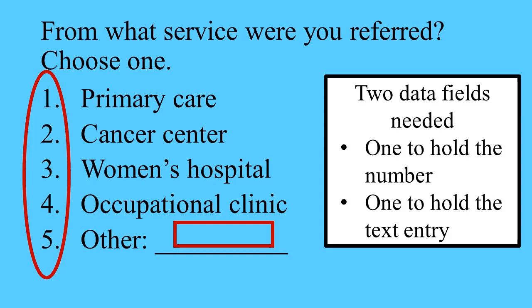But whenever someone chooses 5 — other — we need to make sure they also fill in this additional text field to describe what they mean by other.